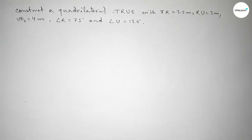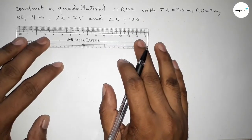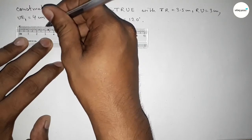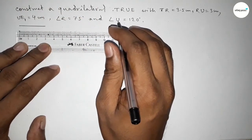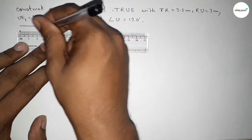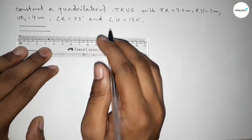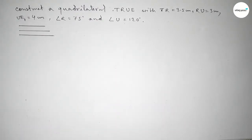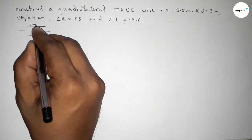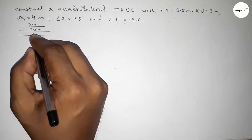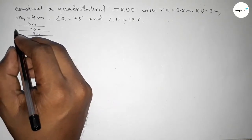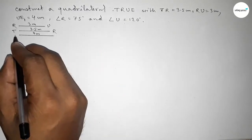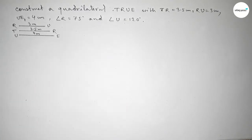First of all, we have to draw the three given lines. Drawing a line of length 3 centimeters, then another line of length 3.5 centimeters, and lastly a line of length 4 centimeters. So this one is 3 centimeters, this one is 3.5 centimeters, and this line is 4 centimeters. This is RU, this is TR, and this one is the UE line.